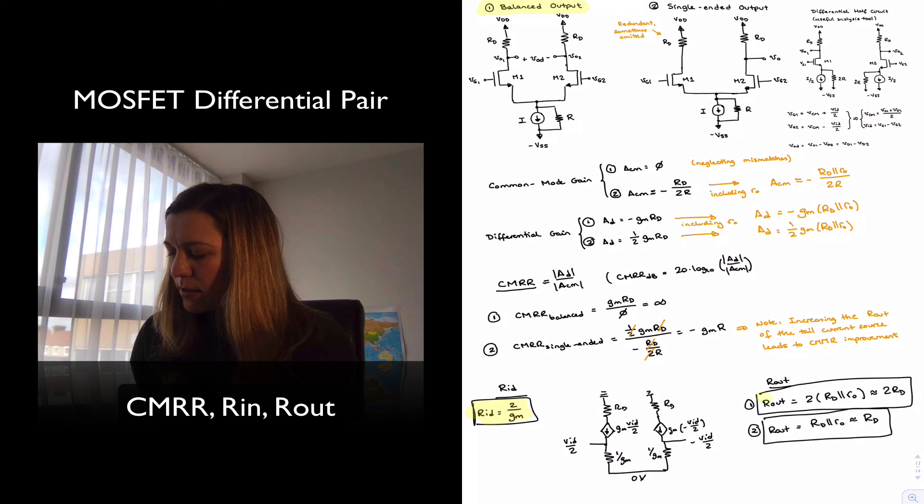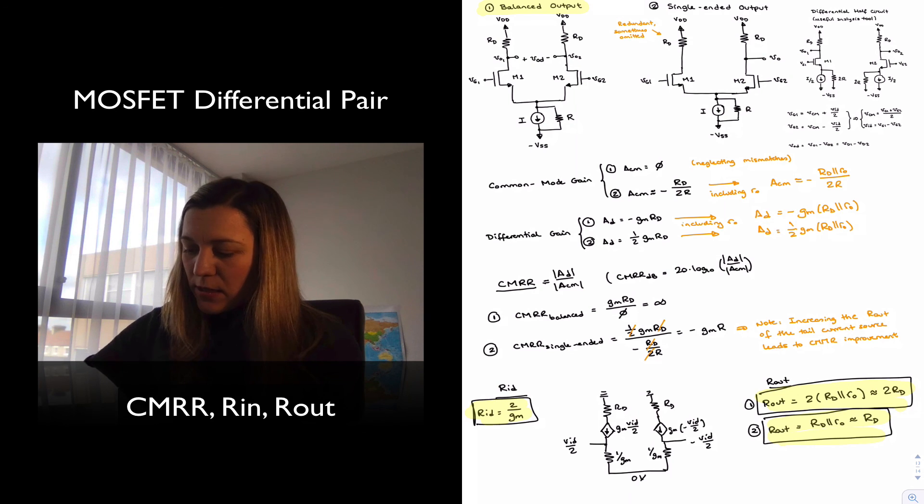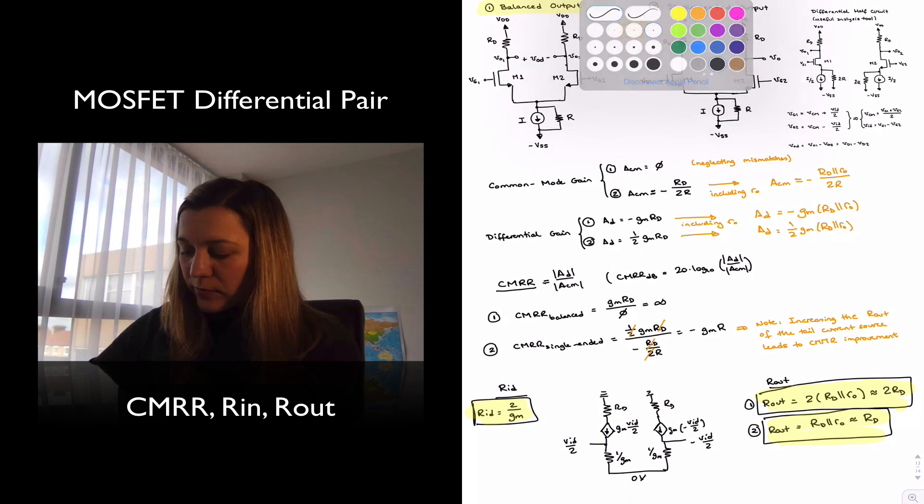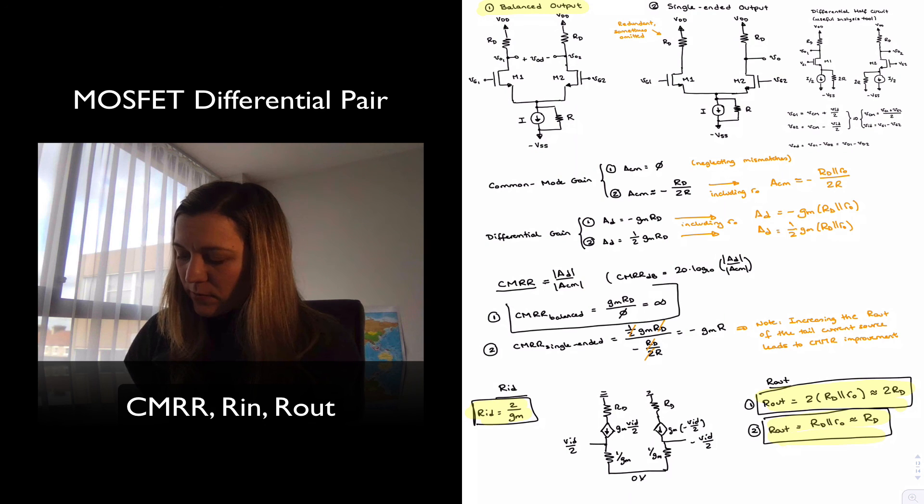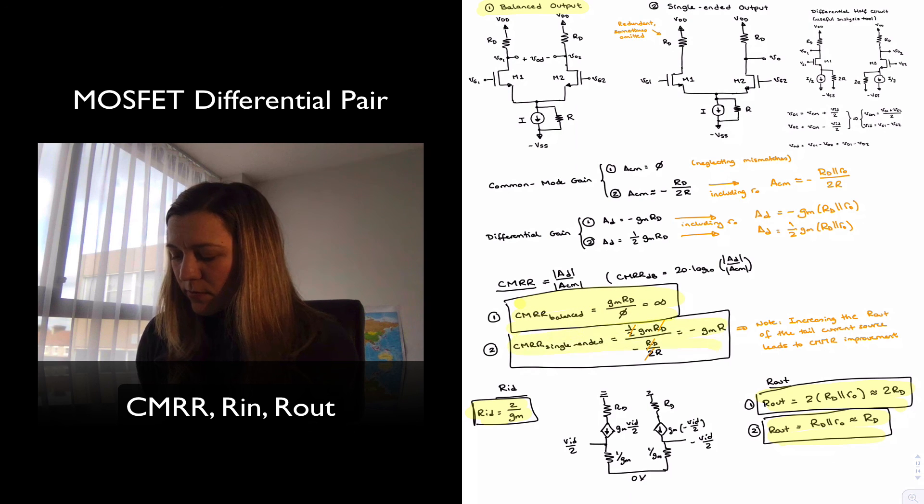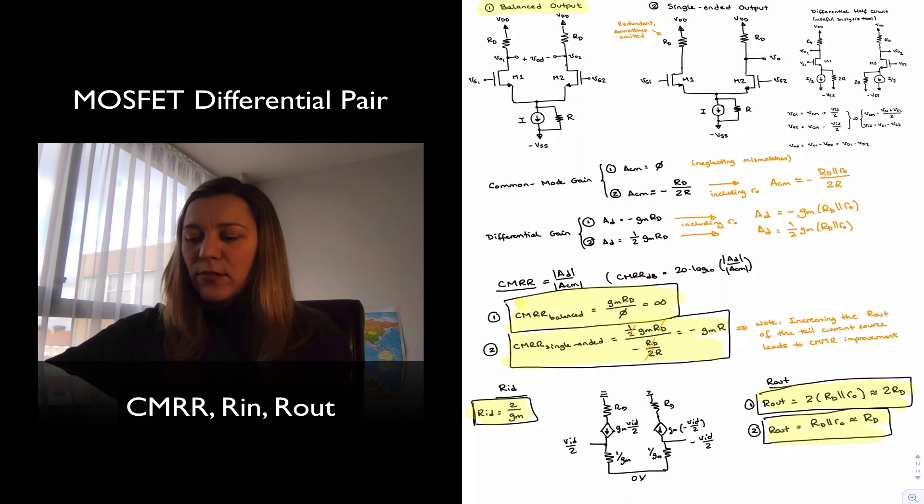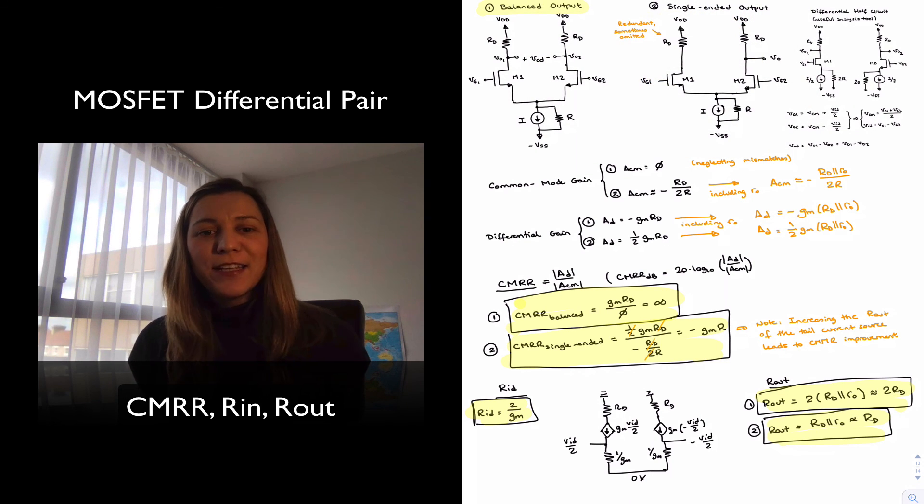And that is it, these are the expressions for input resistance, output resistance for both cases, as well as the CMRR. And now we should be ready to start analyzing or designing MOSFET differential amplifiers. Thank you.